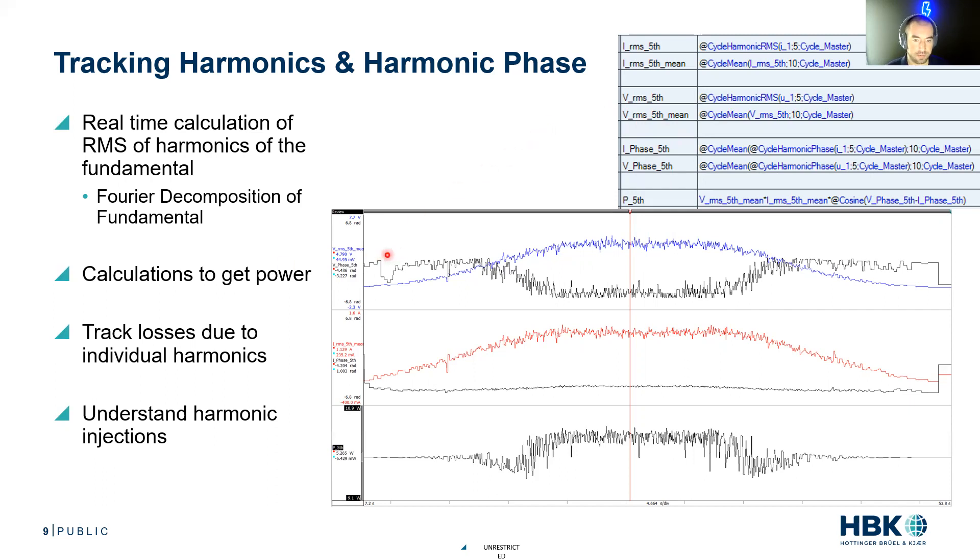I just multiply the RMS of the fifth harmonic times the current RMS of the fifth harmonic times the cosine of the difference of the phases. I'm actually calculating what is the power contribution of my fifth harmonic. This is really cool because this is all being executed in real time. We're seeing all of this as a scope trace. In my example, I have my fifth harmonic RMS in blue. For this given test, I was ramping up speed, holding a given speed, then ramping down speed, and I was holding a constant torque the whole time.